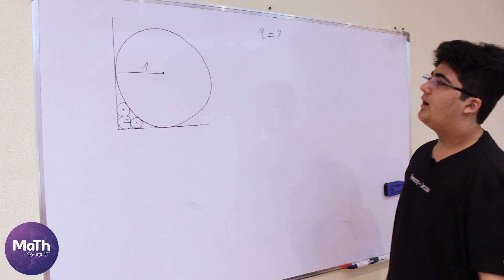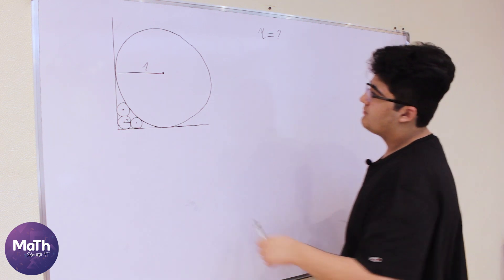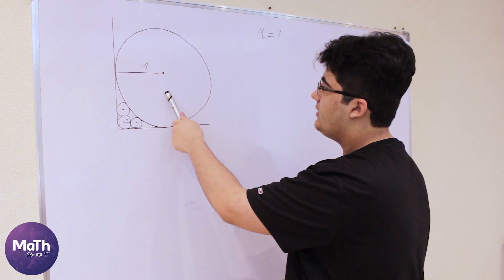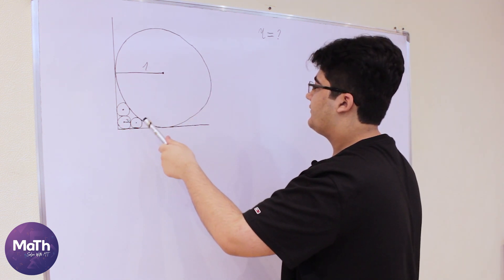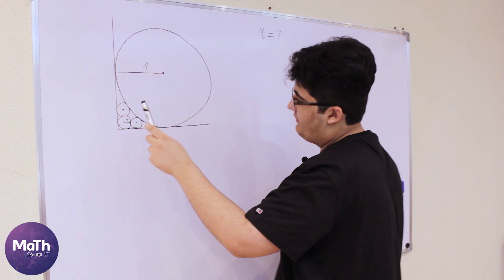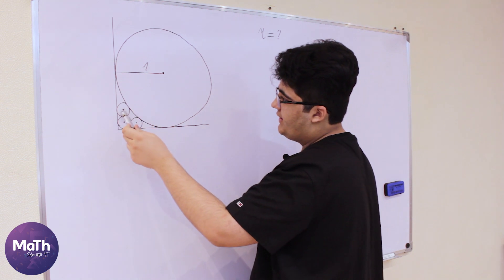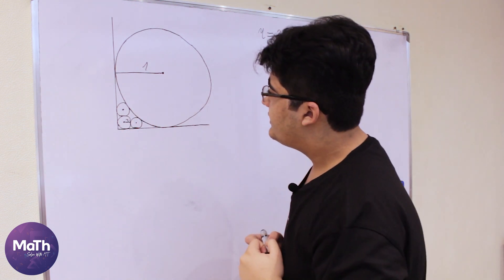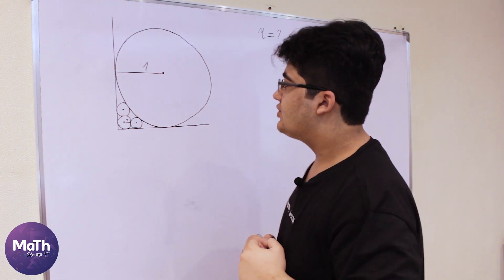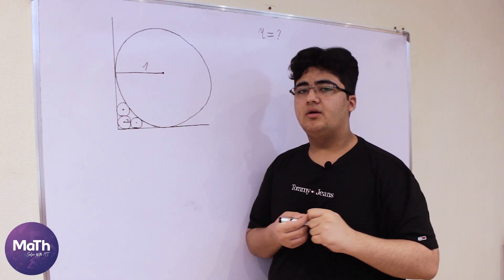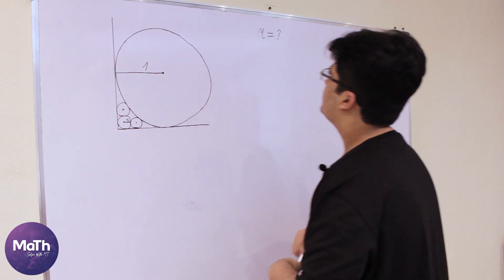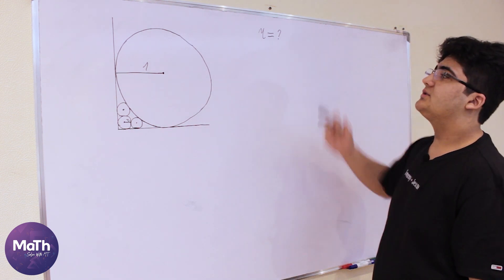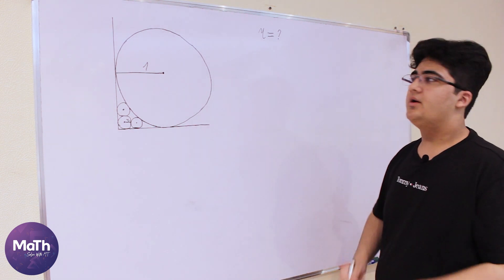The radius of the bigger circle is 1, and we have three congruent circles where the radius of each of them is r. So we need to find the value of r.